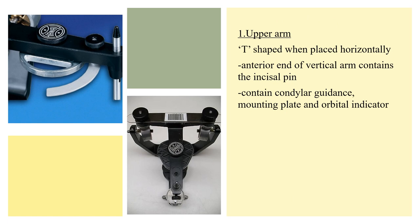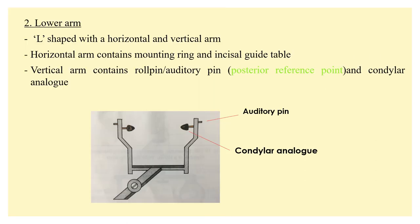In close-up: on the upper arm you can see the mounting plate and the incisal pin attached to the upper member; the orbital indicator is also attached to the upper member. On the lower arm there is an auditory pin and a condylar analog — the round spherical structure attached to the lower member replicating the condyle of the mandible. The lower arm is more or less L-shaped, with a horizontal arm and a vertical arm, and it also has a mounting ring and the incisal guide table.